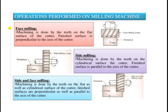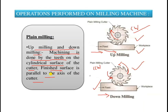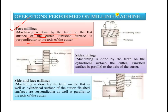Another operation performed on milling machines, different from plane milling, is face milling. In face milling, the top portion of any component is given a proper shape and size. The machining is done by the teeth on the flat surface of the cutter. The finished surface is perpendicular to the axis of the cutter. Material from the top surface is removed as the cutter rotates in either clockwise or anticlockwise direction while the work piece is given a feed motion.